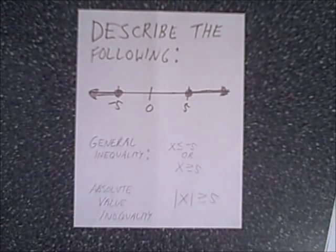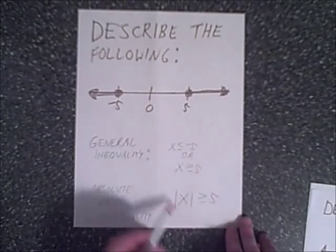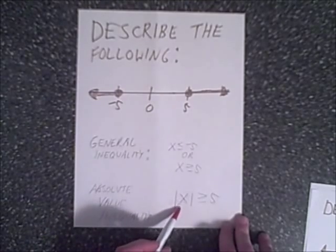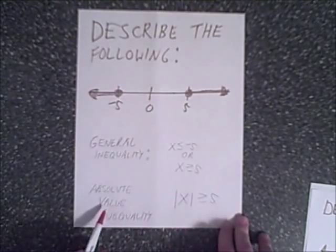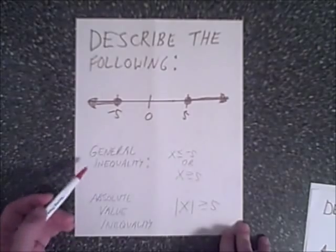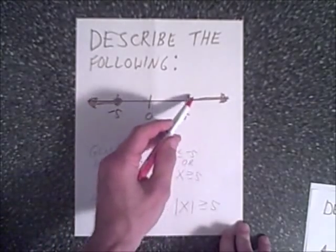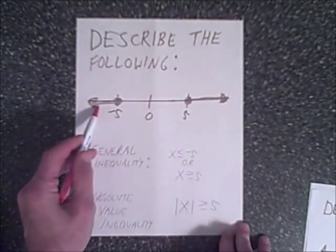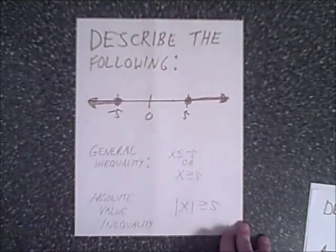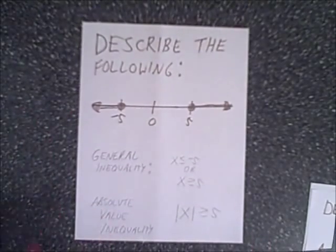And I've actually written out the inequality that will represent this. As you can see, it's the absolute value of x is greater than or equal to 5. And it's pretty intuitive, you just look at it, and 5, and of course, 6, 7, and on, and negative 6, negative 7, negative 8, on down, and everything in between. Okay, so that's the first example.